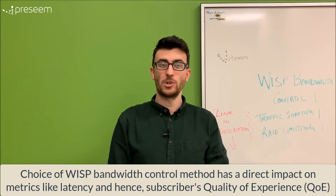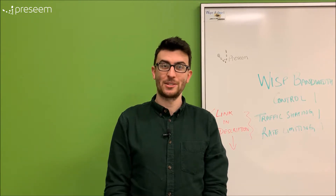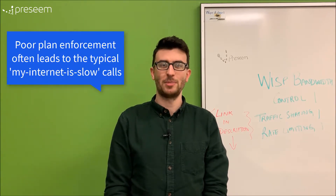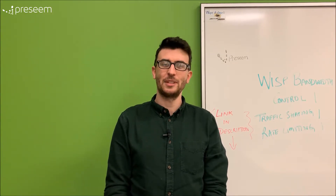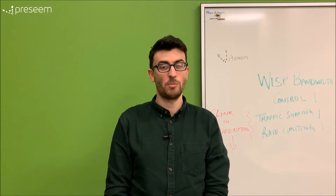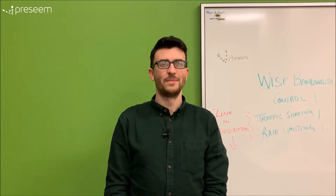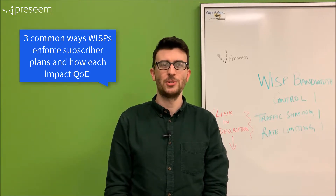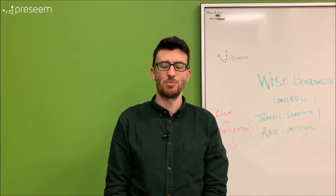Poor plan enforcement leads to the typical 'my internet is slow' calls. This is typically seen in situations where users of bulk applications like Netflix or streaming video negatively impact the experience of interactive applications like VoIP or gaming. Let's talk about three common WISP bandwidth control solutions that many WISPs deploy and what kind of QoE issues exist with each approach.